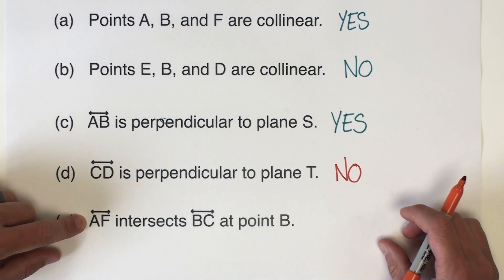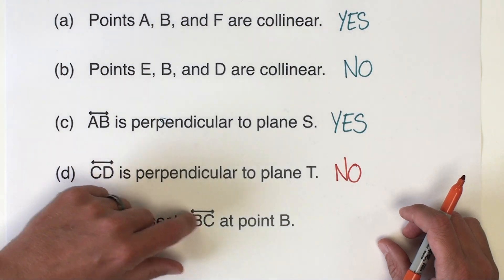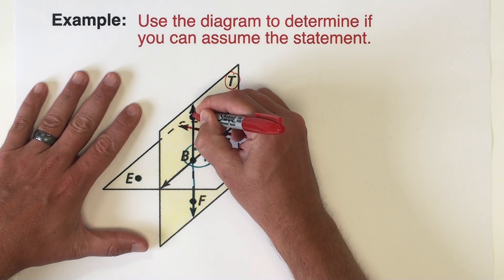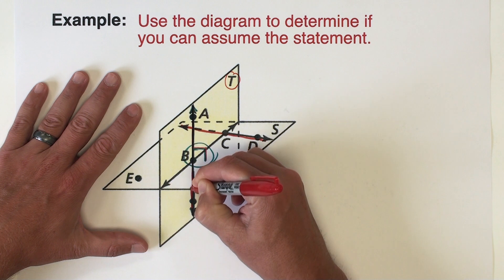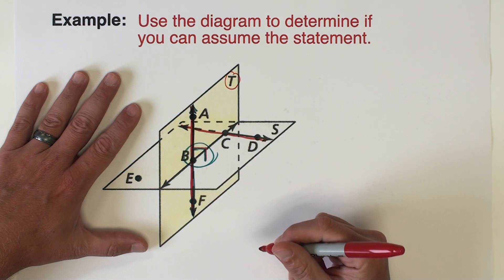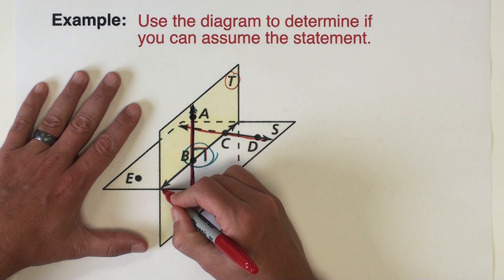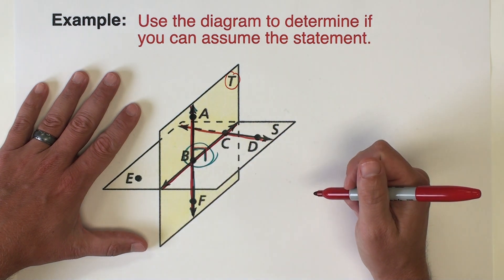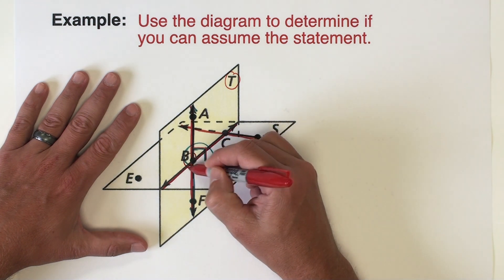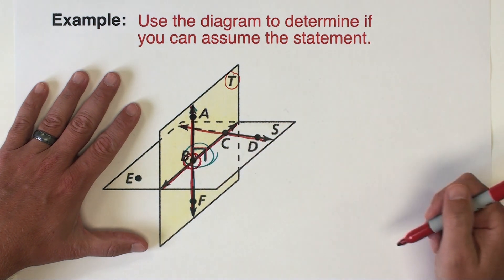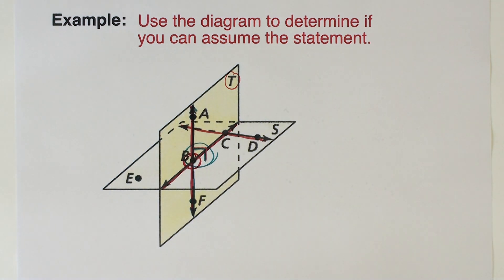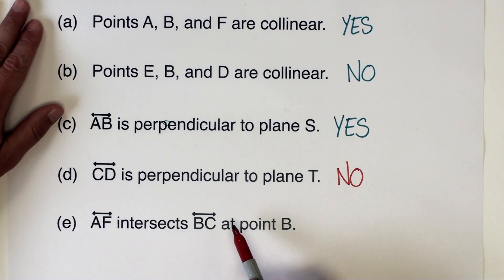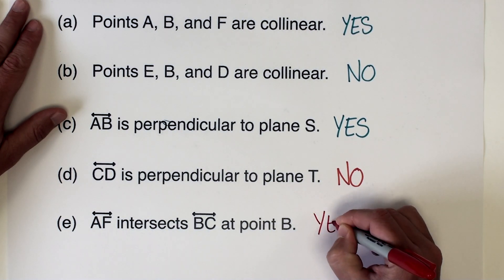The last statement says line AF intersects line BC at point B. Line AF is this line here, and line BC is this line here. Those two lines intersect, and that intersection point is labeled point B. So we're pretty safe to assume that statement is true. Line AF intersects line BC at point B — the answer is yes.